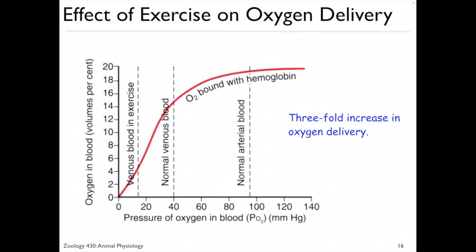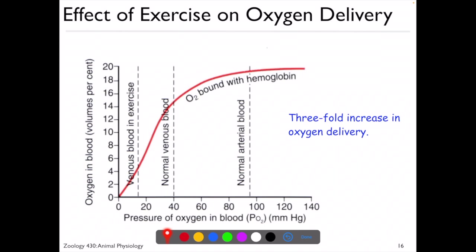Exercise produces a lot of carbon dioxide, and so it really increases oxygen delivery. Normal arterial blood has a huge amount of oxygen bound to hemoglobin — oxygen in air is about 21%, so blood is very well saturated. But as you go through the tissues and back through the venous system, there is a drop. During exercise, we have a tremendous drop due to the Bohr shift with the acidification of the blood — there is at least a three-fold increase in oxygen delivery during exercise.